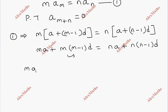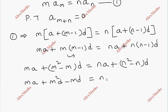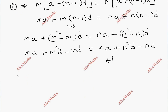Expanding both sides: M·a plus (M squared minus M)·D equals N·a plus (N squared minus N)·D. Rearranging: M·a plus M²D minus M·D equals N·a plus N²D minus N·D.